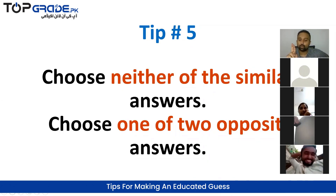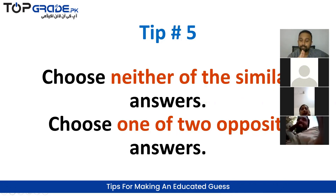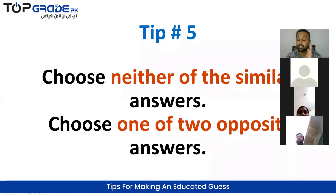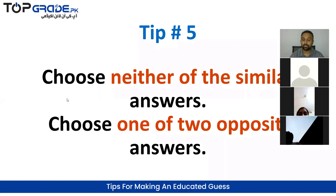When two answer choices go in opposite directions, both may be plausible. For example: 'enzyme activity increases with temperature' or 'enzyme activity decreases with temperature' — these are opposite directions. When options are similar, rule them out. When they are opposite, keep both and think carefully about which one to choose.